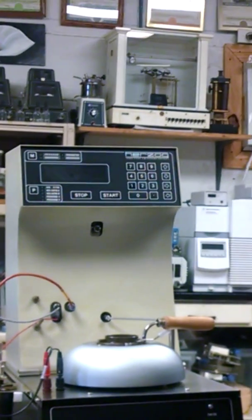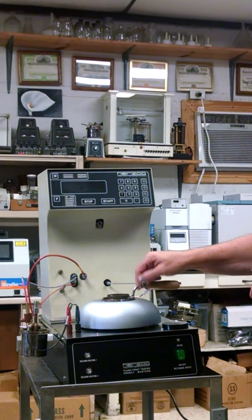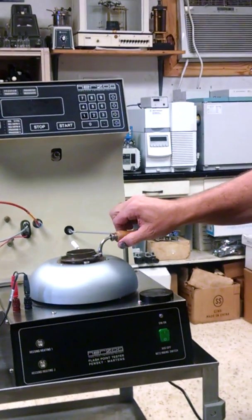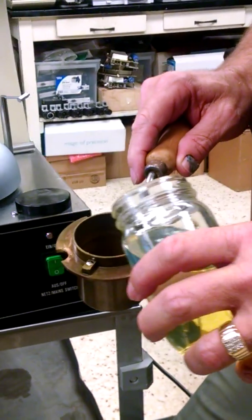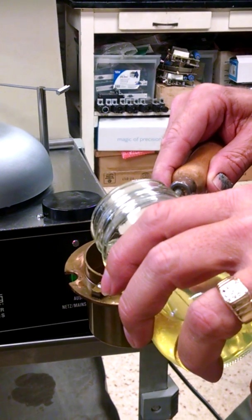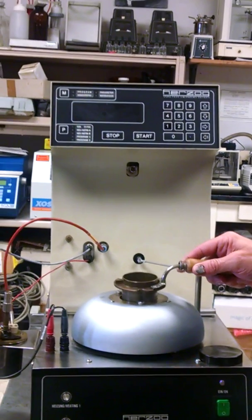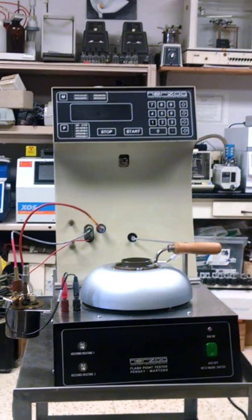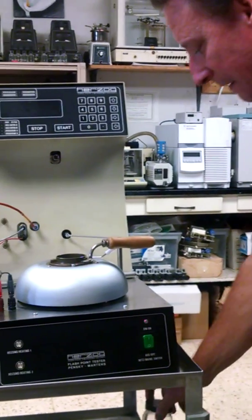First thing we're going to do is a flash test on diesel. We've got a little bit of diesel here. We're going to take the cup out. It's got a little lock right here. You unlock the cup and pull it out. If you can see, there's a little line in there. So what you want to do is fill your diesel up to that line. Then you put your diesel sample in the flash cup, lock it down, put the lid back on the diesel sample, and put it out of the way.